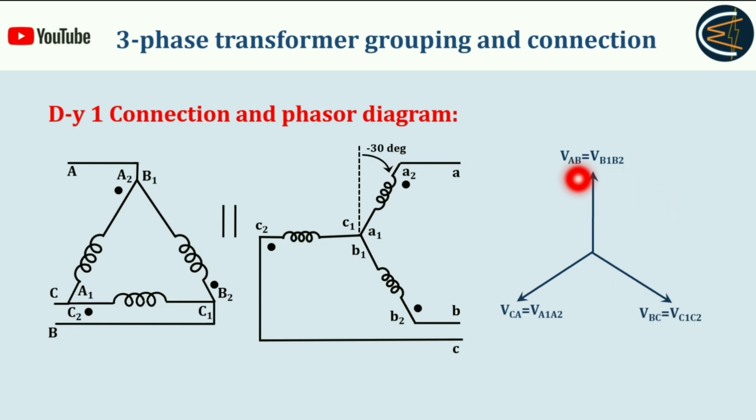by an angle of 30 degrees. See here, these red marked phasors are showing the secondary side phase voltages: V_B1B2, V_C1C2, and V_A1A2. What will be the corresponding line voltage?